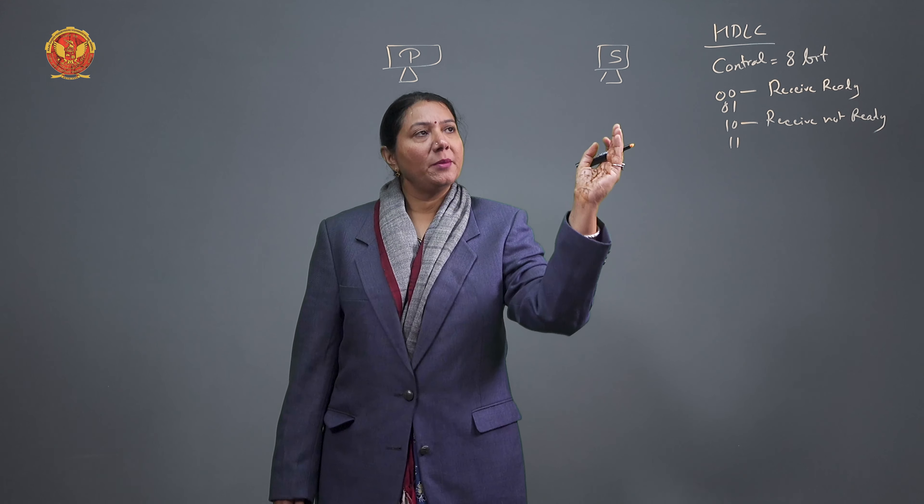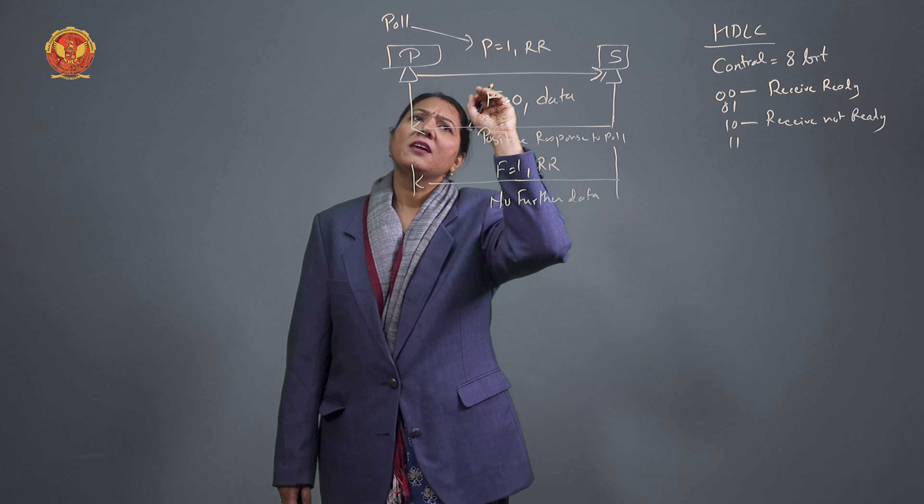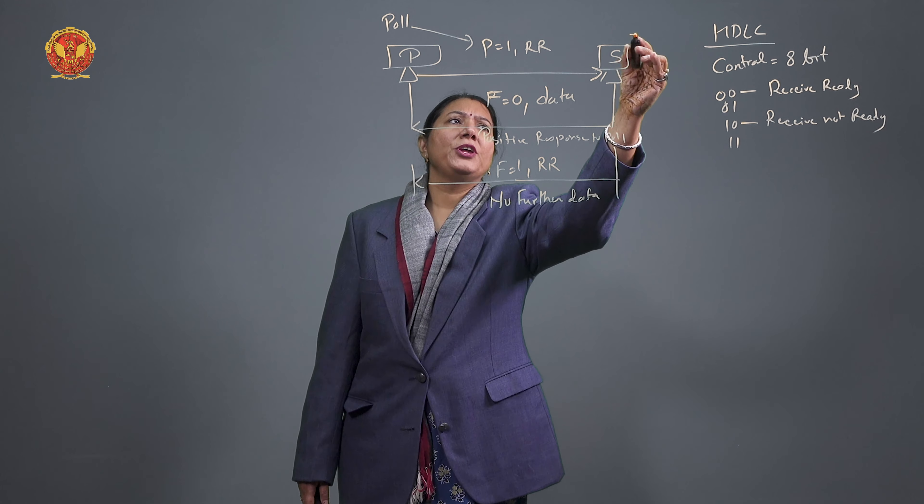When this poll information reaches the secondary, the secondary is asked if it has data to send. If the secondary has data, it sends a positive response to the poll. The secondary starts sending data directly to the primary with F=0, indicating more data is coming, frame by frame.